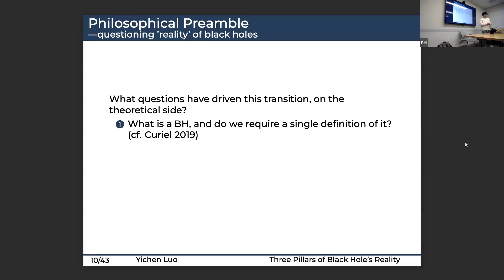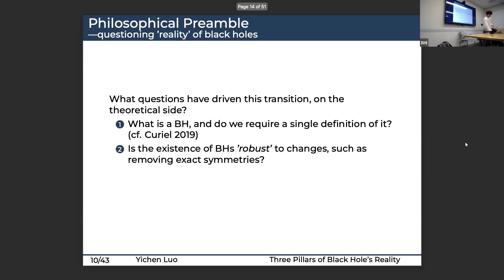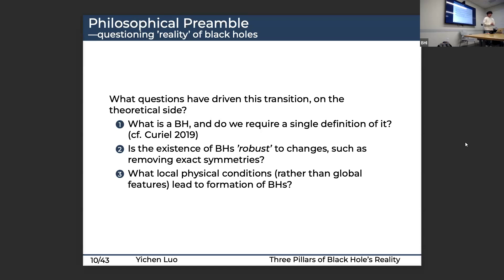The questions driving this theoretical transition are: Should we require a single unique definition of a black hole — there is a beautiful survey by Curiel asking exactly how many definitions there are. Is the existence of black holes robust to changes such as removing or weakening symmetries and various idealizations? And what local physical conditions, rather than global features of solutions, lead to the formation of black holes in more dynamical detail?